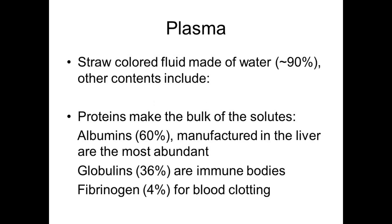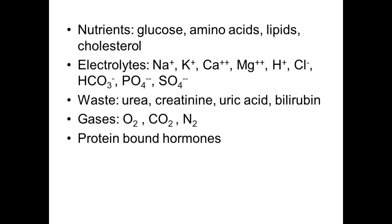Plasma is a straw-colored fluid made of approximately 90% water. The three major plasma proteins are: albumin (60%), manufactured in the liver and the most abundant; globulins, which are immune bodies; and fibrinogen, for blood clotting. Nutrients present in plasma include glucose, amino acids, lipids, and cholesterol.